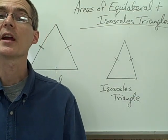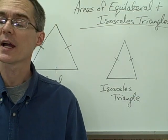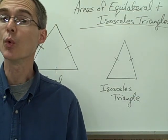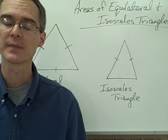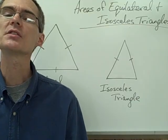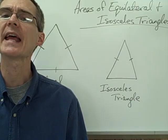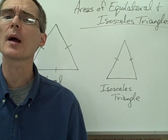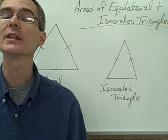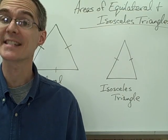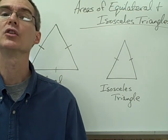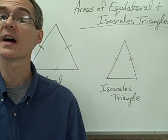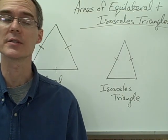We've already talked about how the area of any triangle is equal to one-half base times height. In this video, we're going to be looking at some particular properties of equilateral and isosceles triangles that we can use to help us find their areas.